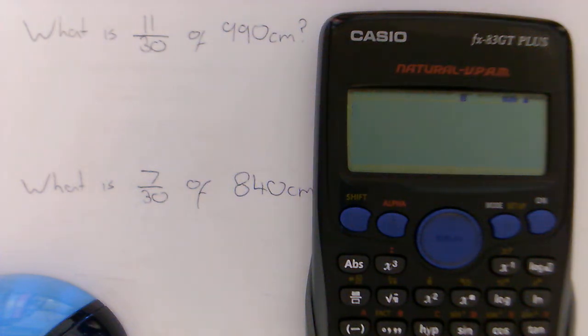In this video we're going to have a look at finding fractions of amount using the calculator. So this first question we've got, we're asked what is 11 thirtieths of 990 centimetres.